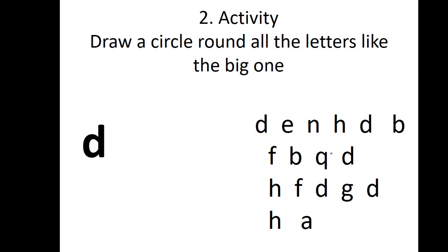Activity number two. You draw a circle around the letters like the big one. The big one is here on the left side. That's letter D. Then you look at the letters here. Find out all the letters, all the letter D's. Then you circle around them. The next letter, you should identify that letter. I'm not going to tell you which letter is that. You should identify that letter yourself. And you find out all the letters exactly like that letter.